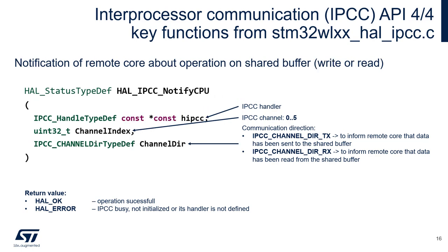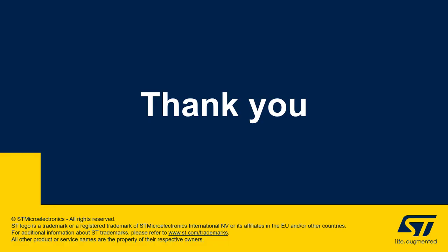HAL_IPCC_NotifyCPU is one of the most important functions in the IPCC HAL library. It creates a notification to the other core about an operation — write or read — on the shared buffer. It requires three arguments: the IPCC handler, the channel number (0–5), and the IPCC channel direction (TX or RX). Once notifications are activated, this function will trigger an interrupt on the second core, informing it about the change in the shared buffer. Thank you for watching this video.